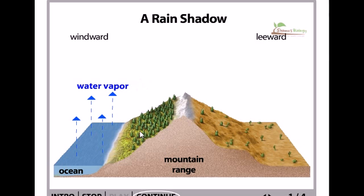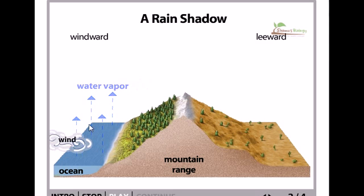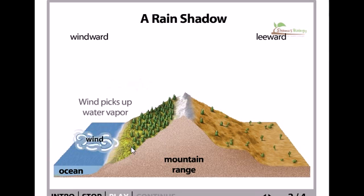Let's begin at the ocean where the water evaporates and is held in the air as water vapor. Prevailing winds carry all this moist air over the land. As the air rises up the mountain, it expands and cools.